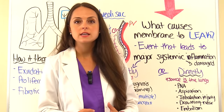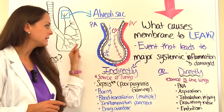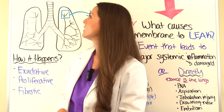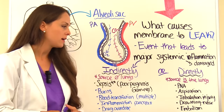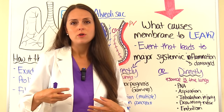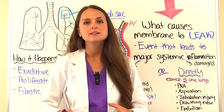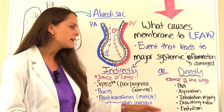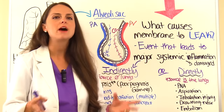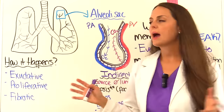A person can also develop ARDS through direct causes, where the lungs themselves are directly damaged. Direct causes include pneumonia, which can damage the capillary membrane; aspiration of food or gastric secretions (which are particularly damaging to delicate lung tissue); inhalation injury from toxic substances like smoke or powders; near-drowning events; and some types of embolism.